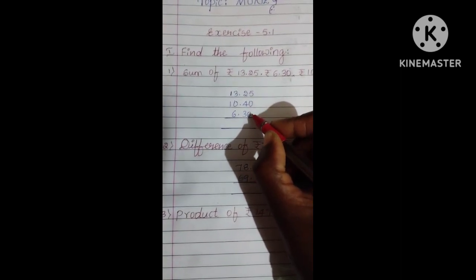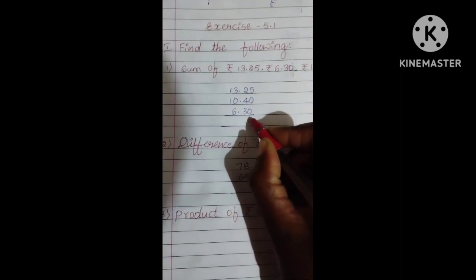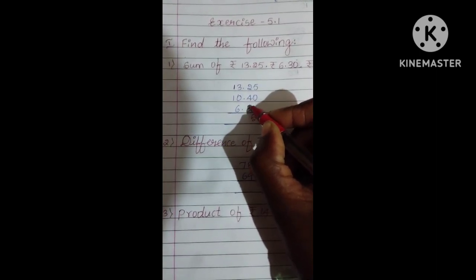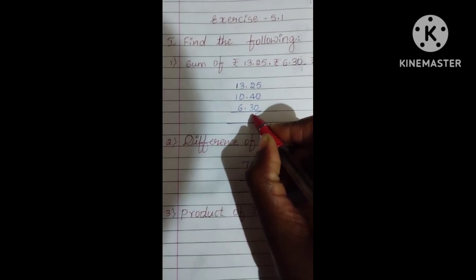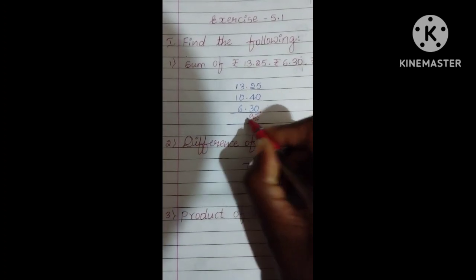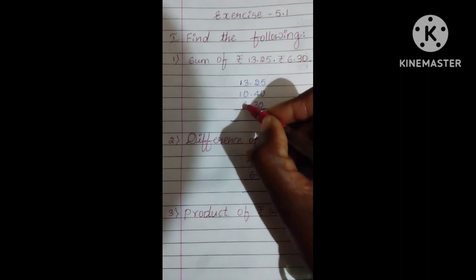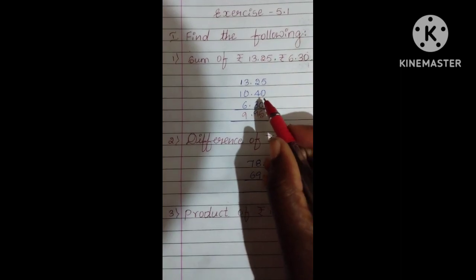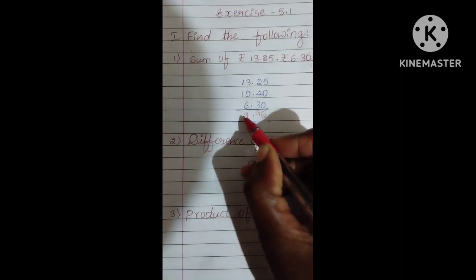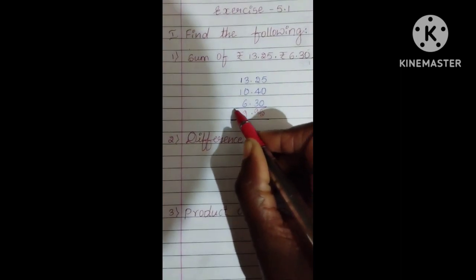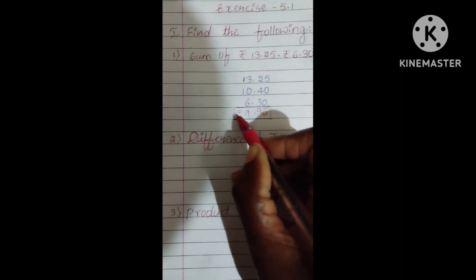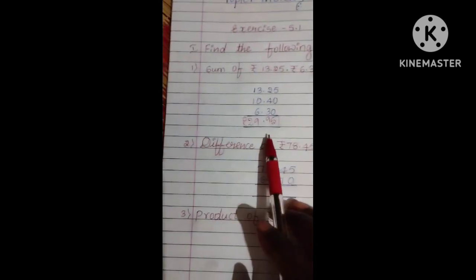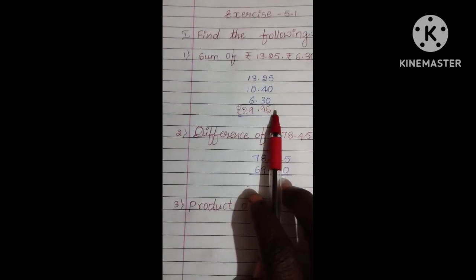5 plus 0 plus 0 means 5 only. This is 2 plus 4, 6. So 6 plus 3, 9. Next, 3 plus 6, 9. 1 plus 1, 2. Answer is 29 Rupees. Rupees 29, 95 paise.